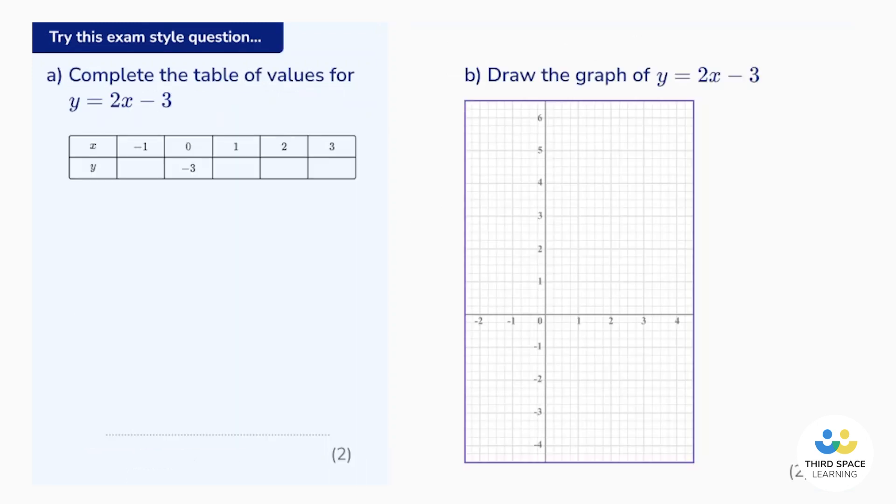This question is slightly different. It says complete the table of values for y equals 2x, take away 3. Well, let's do that. We can do that by substituting in values of x into the equation. So let's pick one. Let's take a nice easy one. Let's take x equals 1.